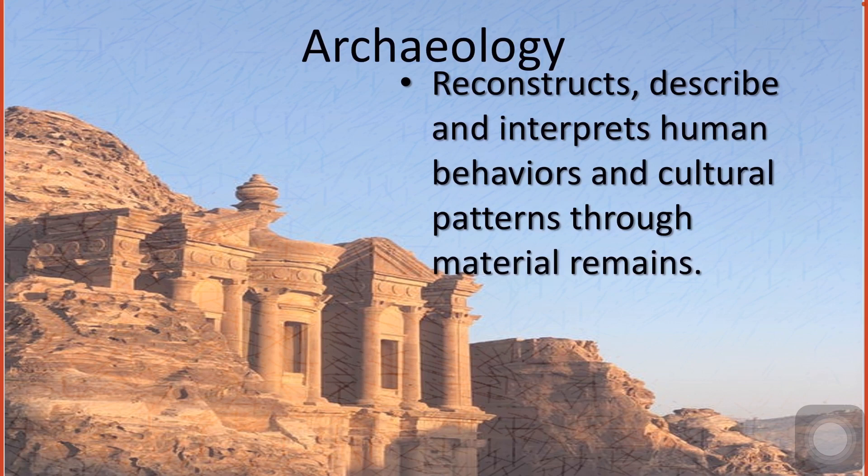Did the group get its meat from hunting, or did it domesticate and breed animals, killing only those of a certain age and sex? Did plant food come from wild plants or from sowing, tending, and harvesting crops? Did residents make, trade for, or buy particular items? Were raw materials available locally? From such information, archaeologists reconstruct patterns of production, trade, and consumption.